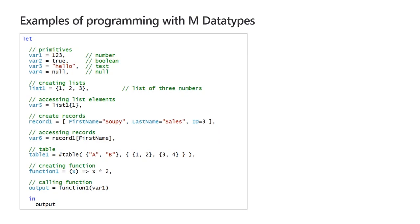Here are some examples: if you're writing M code you can assign var1 as a number; then you have true/false Boolean values, text values, and null. If you want to create a list, you can think of it as an array — you use curly braces. To access something inside the list, you use the same curly braces. We also have records: you put square brackets at the beginning and end and then have fields and values. If you have a record and want to pull a field value out, you use the square bracket syntax.